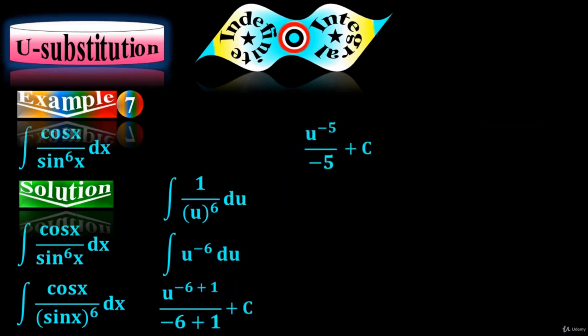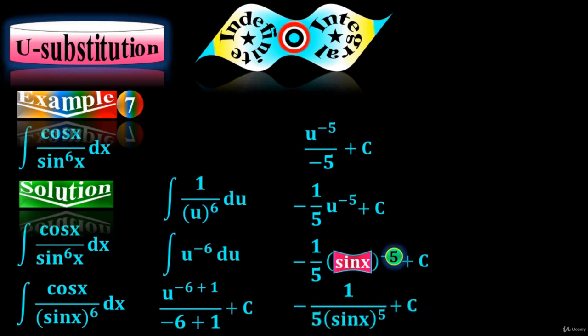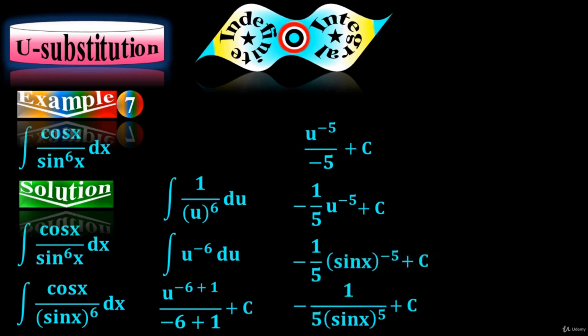Solving further, the final expression is minus 1 over 5 times u to the minus 5, plus C. Now substitute back u = sin(x). Pull sin(x) to the minus 5 down to the denominator to get minus 1 over 5 sin⁵(x) plus C. That is the final answer.